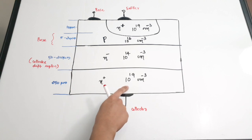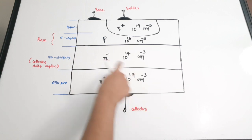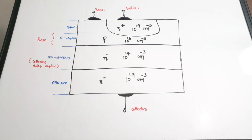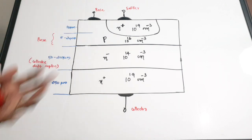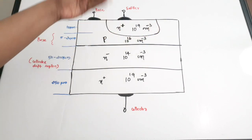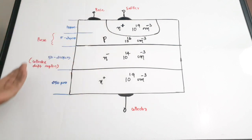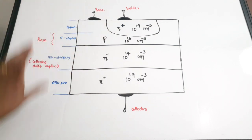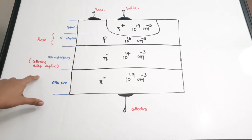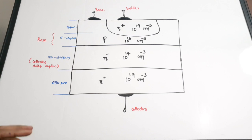The doping concentrations are also marked: for the N+ layer it is 10^19 cm^-3, for the N- layer it is 10^14, for the P layer it is 10^16, and for the bottom N+ layer it is again 10^19 cm^-3. In blue color we have marked the thickness of the various layers. In the P layer, some N+ layer is infused and then an emitter terminal is taken out. The N- layer is actually called the drift layer, and it determines the breakdown voltage of this transistor - this region is called the collector drift region.